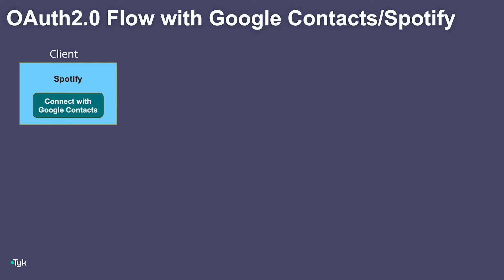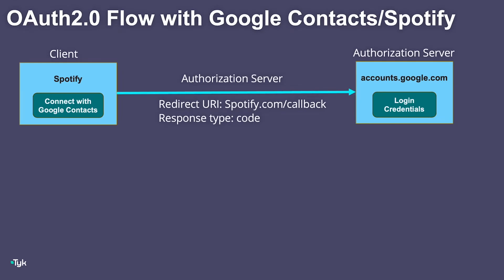Now that we've defined OAuth 2.0, let's use that same Google contacts and Spotify example to understand what's going on under the hood in what's called the OAuth 2.0 flow. As the resource owner, I want to give Spotify permission to access my Google contacts. So I click the 'Connect with Google Contacts' button on Spotify, and I'm sent to Google's authentication server — which could be any auth server, such as Facebook's or Twitter's, but in this case it's accounts.google.com. As I'm sent to the OAuth server, the client also sends over some information the user doesn't necessarily see.